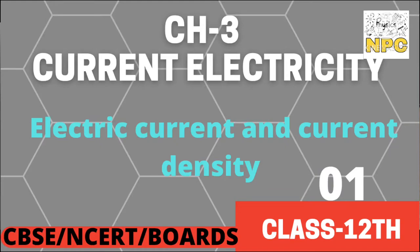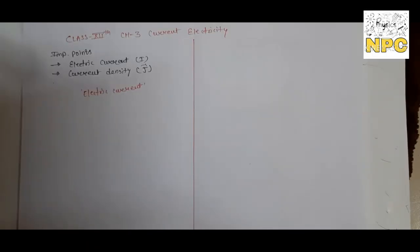Hello everyone, this is Turti, welcome back to NPC - the channel where you can learn all the concepts of physics. We have completed Chapter 1 and Chapter 2, and now we are going to start Chapter 3: Current Electricity. In Chapter 1 and 2 (Electrostatics), electric charges were at rest. Here in Chapter 3, we have electric charge in motion - constant motion with different phenomena and topics which we will study in current electricity.